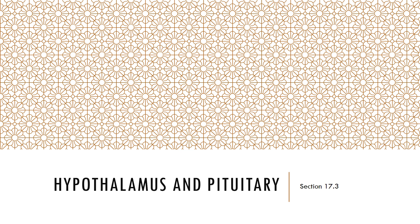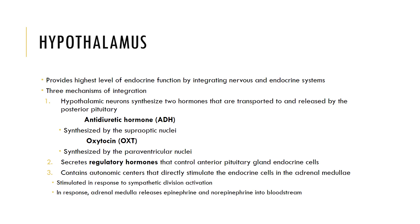Let's examine the endocrine glands, beginning with the hypothalamus and the pituitary. The hypothalamus provides the highest level of endocrine control and integrates the activities of the nervous and endocrine systems through three mechanisms. First, hypothalamic neurons synthesize two hormones — ADH and oxytocin — and transport them along axons within the infundibulum to the posterior lobe of the pituitary for storage and secretion. Second, the hypothalamus secretes regulatory hormones — releasing hormones and inhibiting hormones — that control the secretions of the anterior pituitary gland.